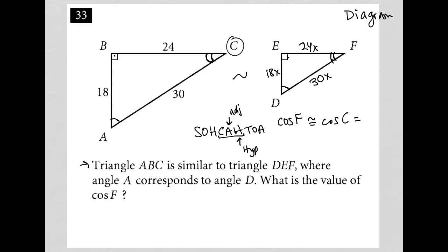The adjacent side to angle C is 24. The hypotenuse is 30. When I simplify this by 6, 6 goes into 24 four times, 6 goes into 30 five times. I get 4 fifths. So my answer here is 4 fifths.